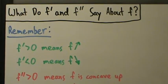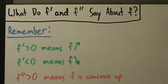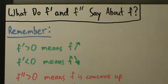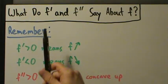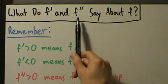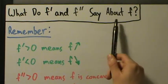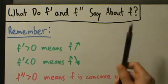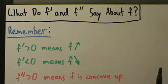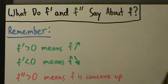In the last few videos we've been talking about the second derivative, concavity, and points of inflection. Now it's time to talk about what f prime and f double prime together say about the original function f. Nothing really new in this video — we're just going to summarize some stuff from the last few videos.